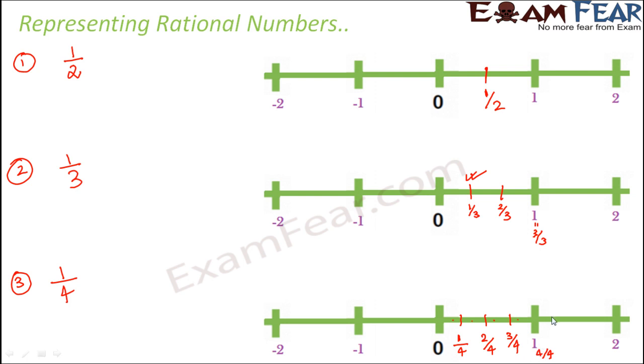Similarly, if you move on, this point would be 5 by 4. This point would be 6 by 4. This point would be 7 by 4. And this point again would be 8 by 4, which would be 2, and so on. So that's how we are able to locate the point 1 by 4 on the number line.